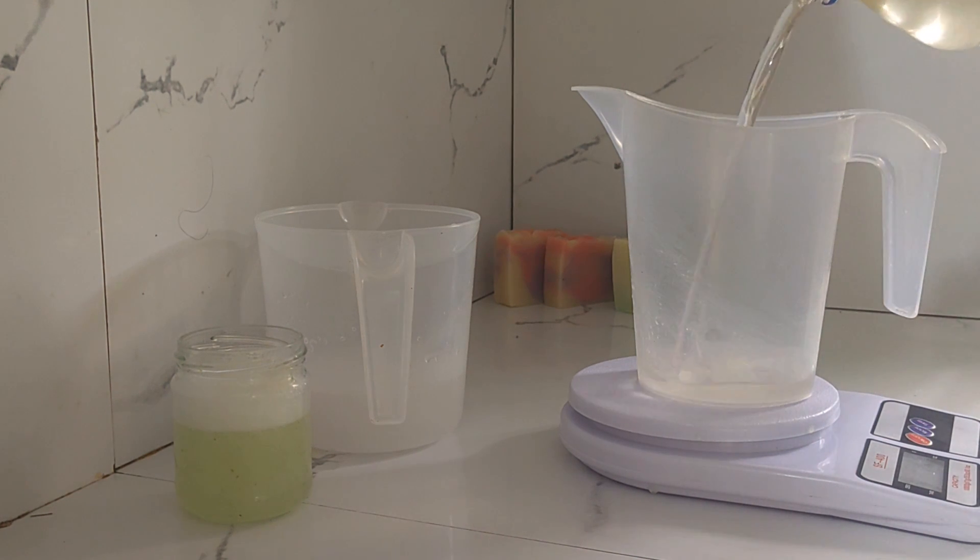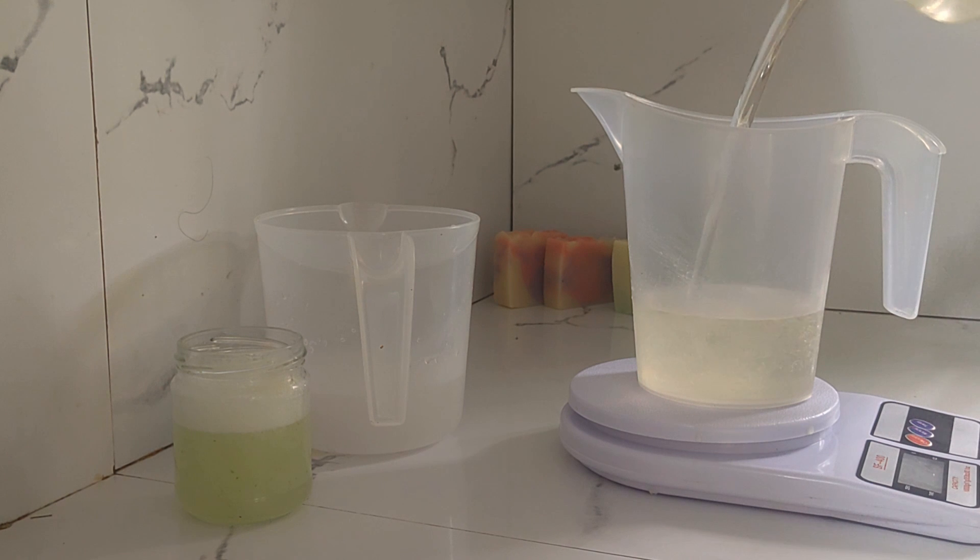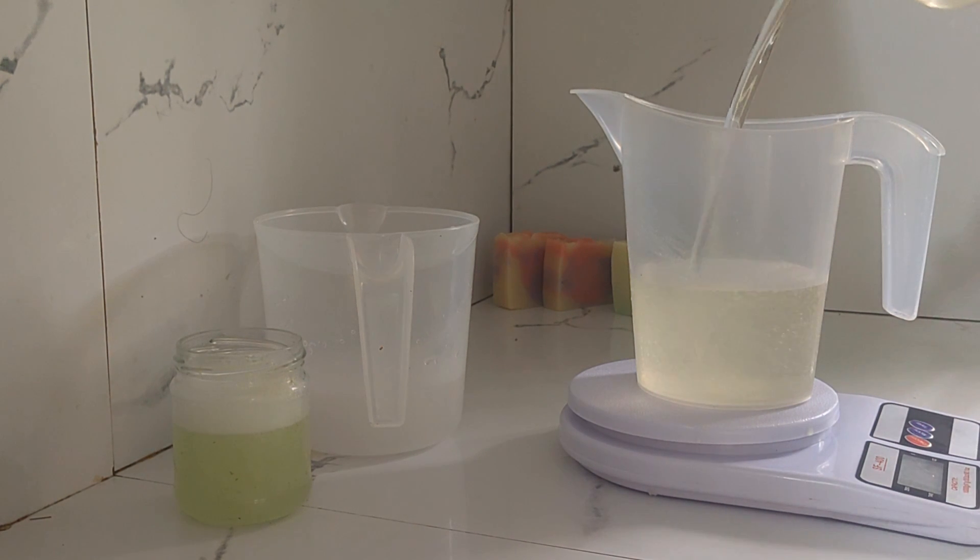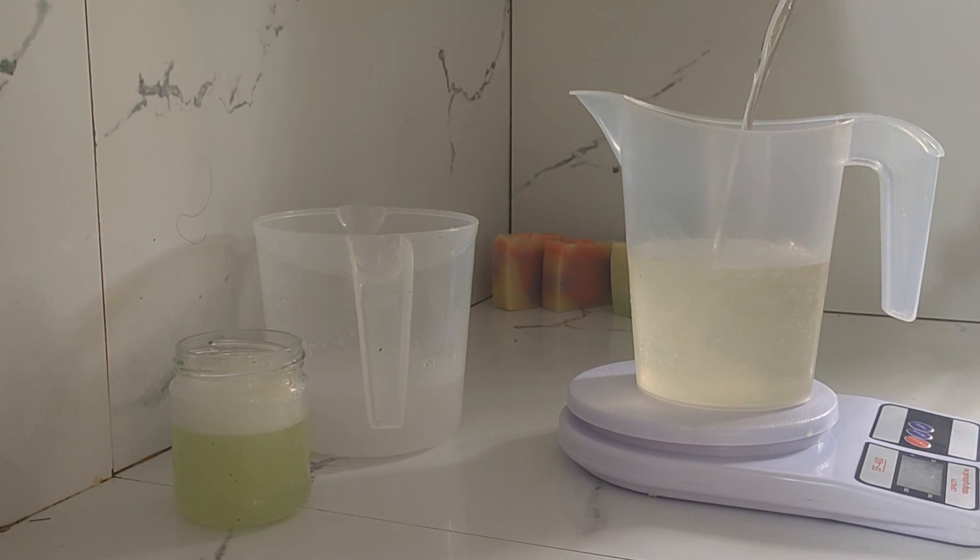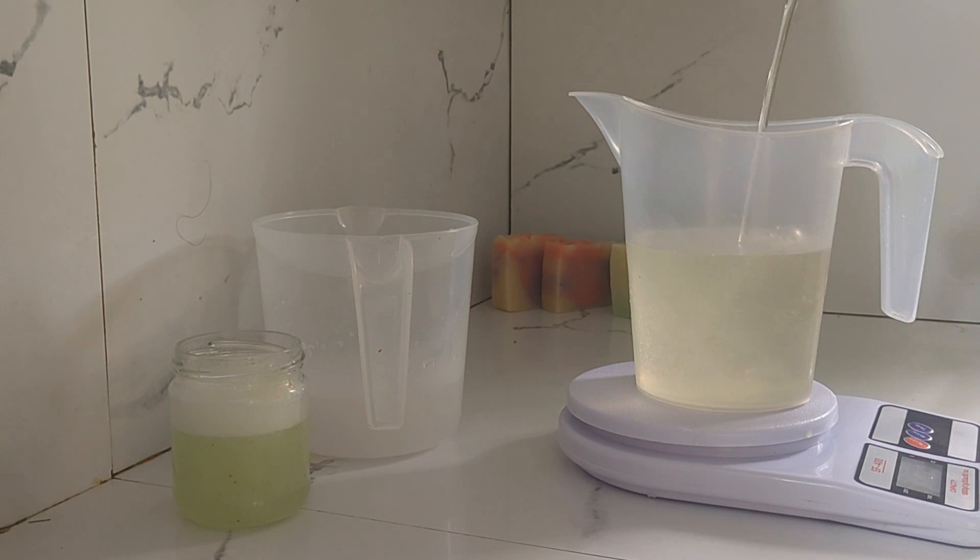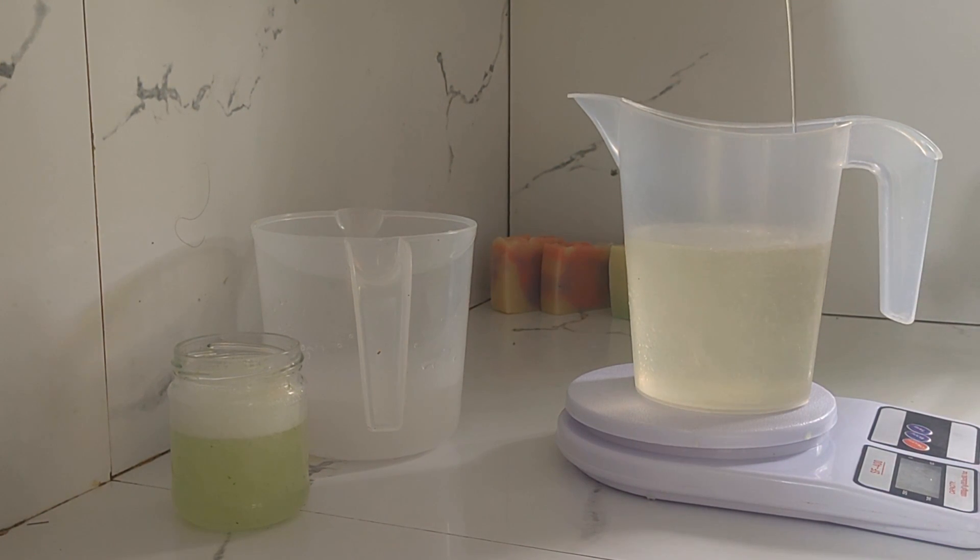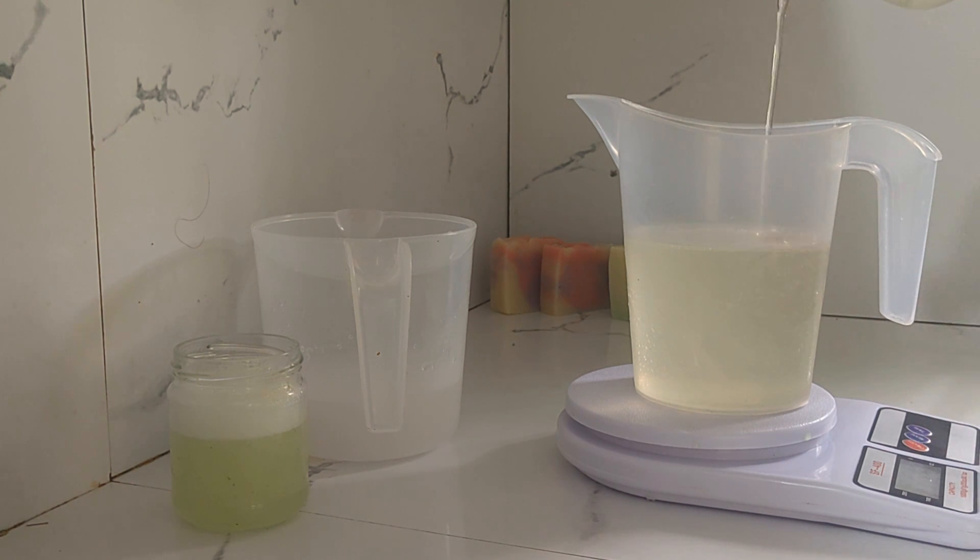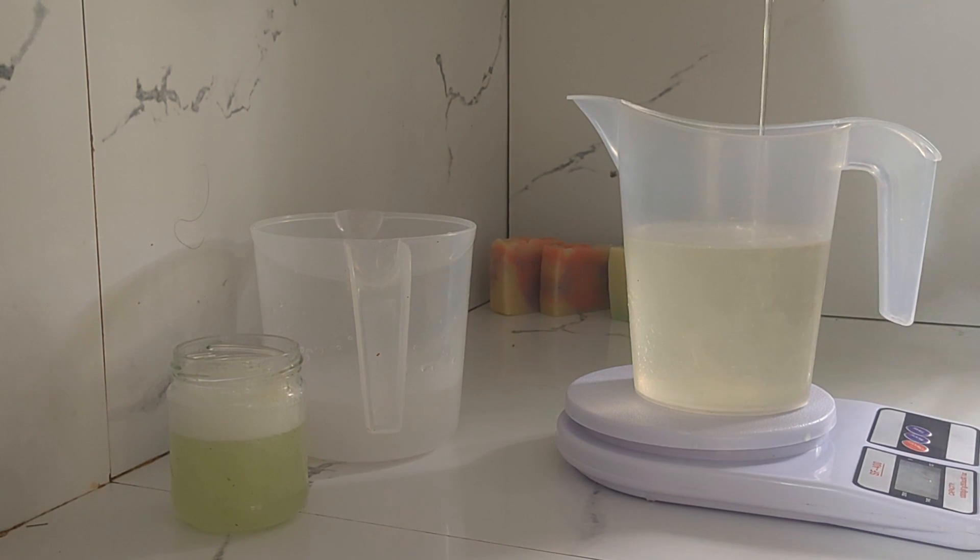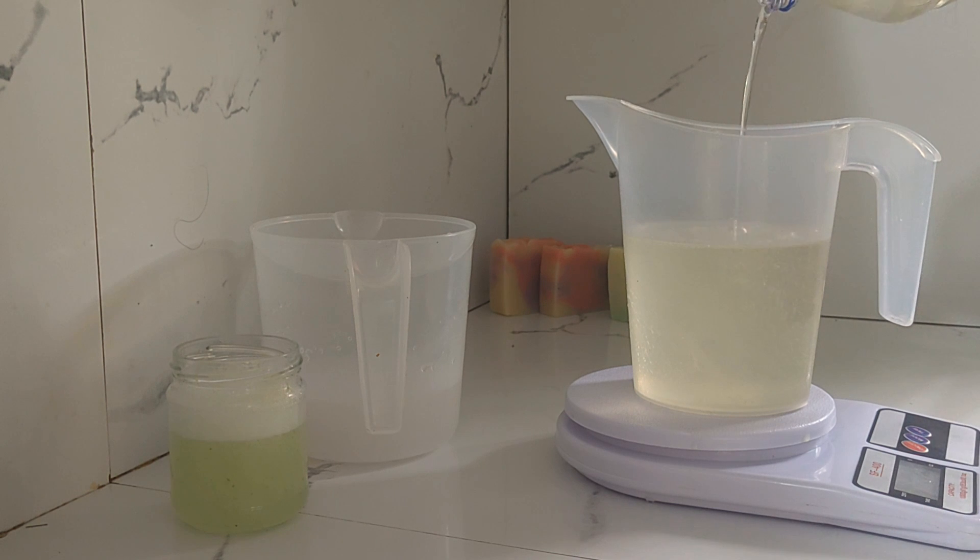I'm going to start measuring out what makes the oil component of my formula now. I'm starting with coconut oil which is going to make up the highest percentage of oils that I'm using in this formula. I'm using 600 grams of coconut oil. I'm going to be using also some palm kernel oil and some baobab oil.